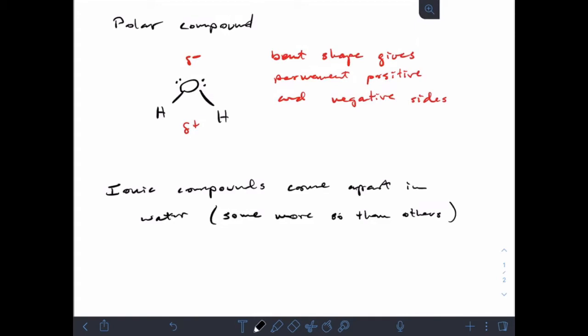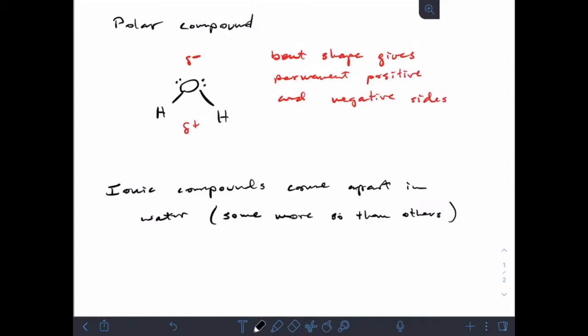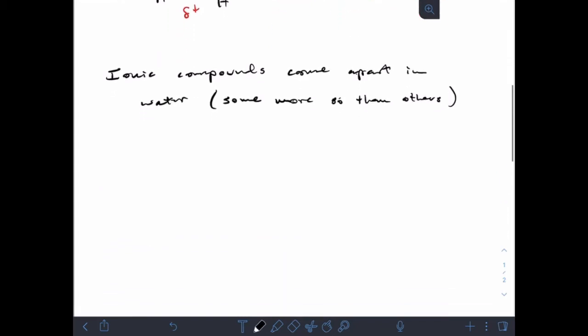All ionic compounds come apart to some degree, but some come apart to such a small degree that we basically say that they don't. That'll be when we start talking about soluble versus insoluble compounds.